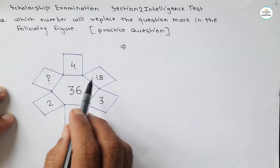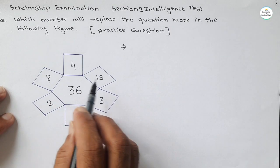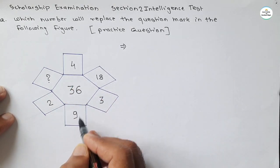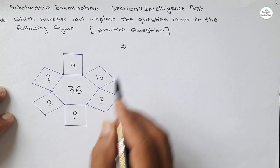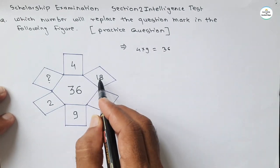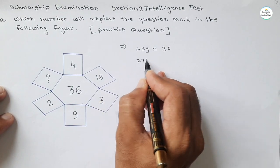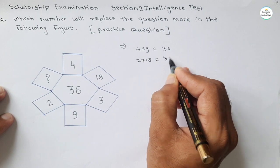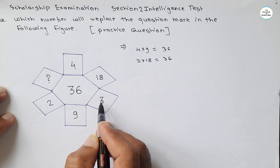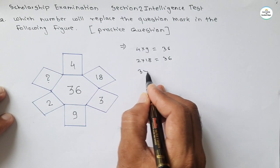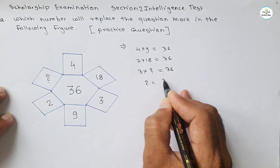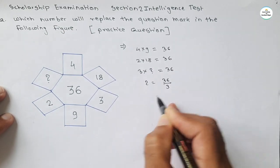That relation must be common for all numbers. Looking at opposite numbers: 4 and 9 — if we take the multiplication, 4 into 9 we get the central number 36. Similarly 2 and 18 — multiplication of these two numbers also gives 36. So this pattern must be applied for the remaining one: 3 into question mark must equal 36.